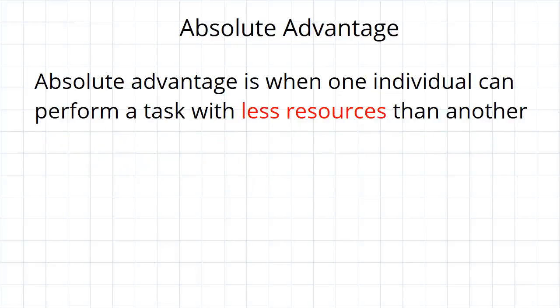First up, absolute advantage is when one individual can perform a task with less resources than another. So we are looking directly at their cost in terms of resources, so it's absolute.